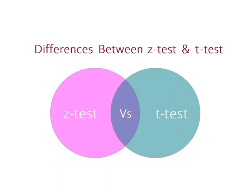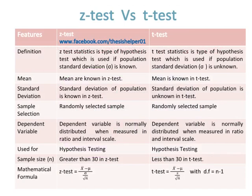Differences between Z-test and T-test. Z-test is a type of hypothesis test which is used if the population standard deviation sigma is known, while T-test is a type of hypothesis test which is used if the population standard deviation sigma is unknown.